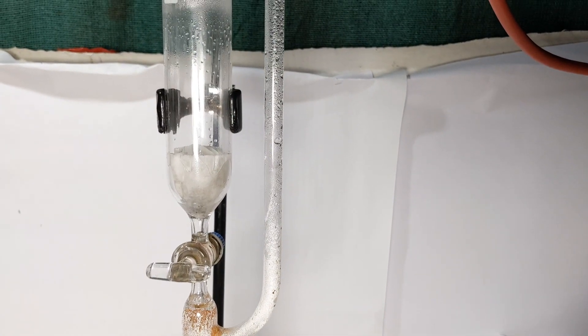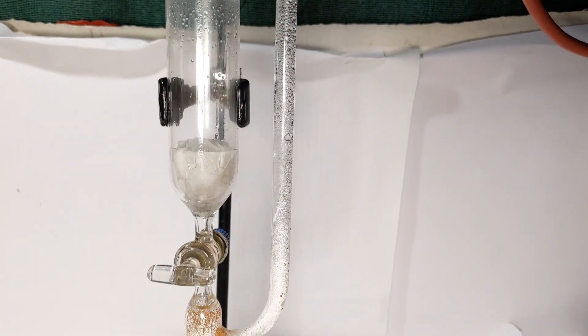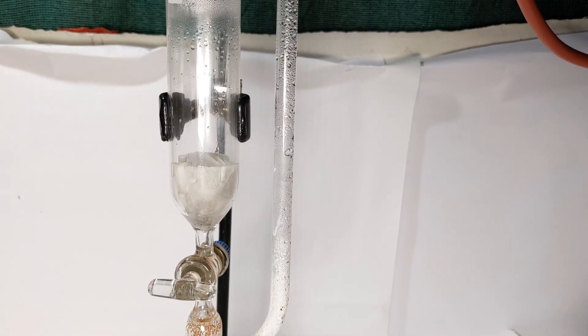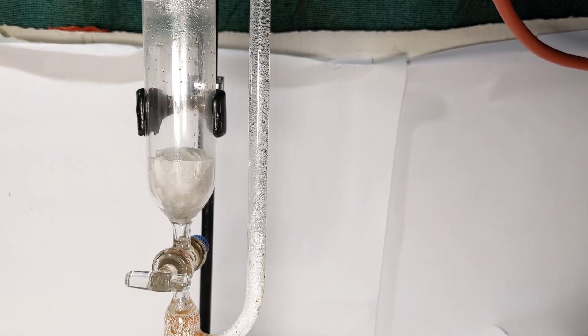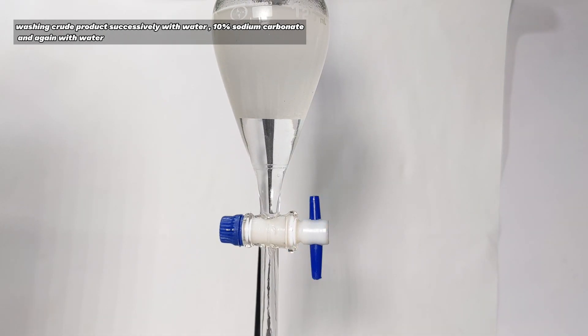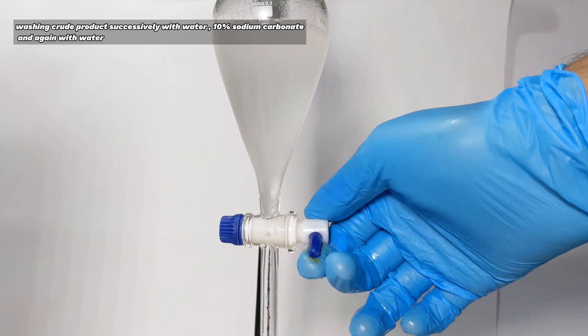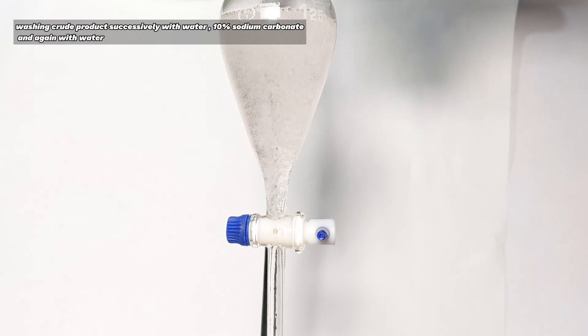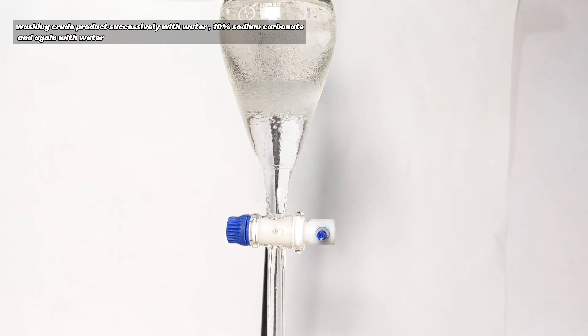When the reaction is complete, we have a clear solution and no traces of iodine was found. It was then transferred to a separatory funnel and first washed with water and then with 10% sodium carbonate solution and then twice with distilled water and separated the crude product.